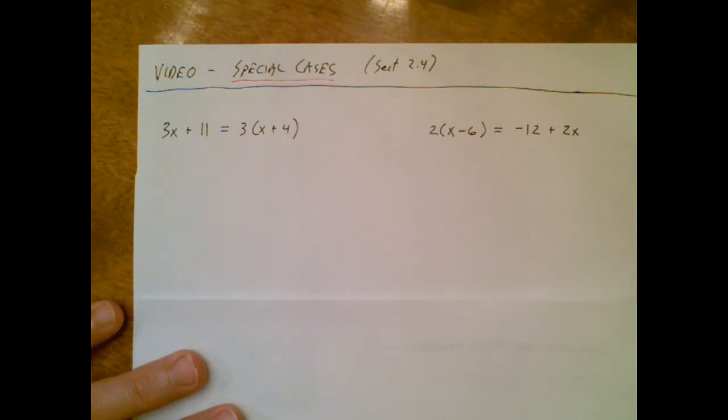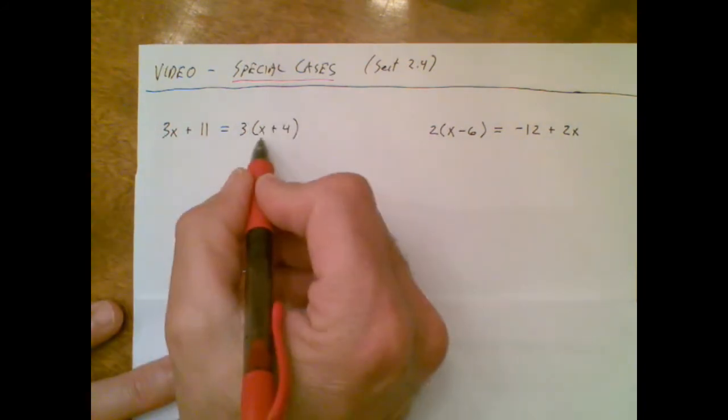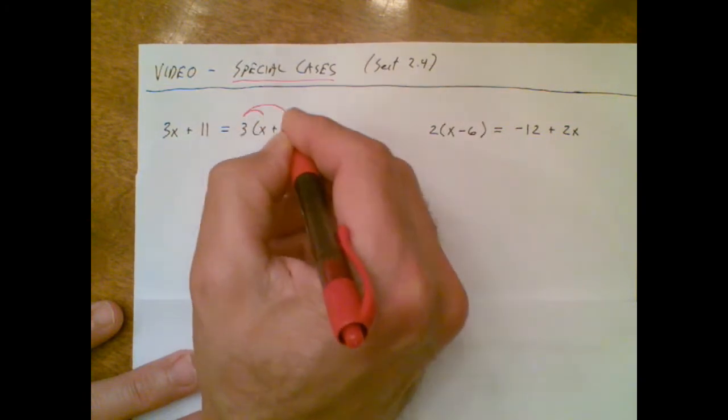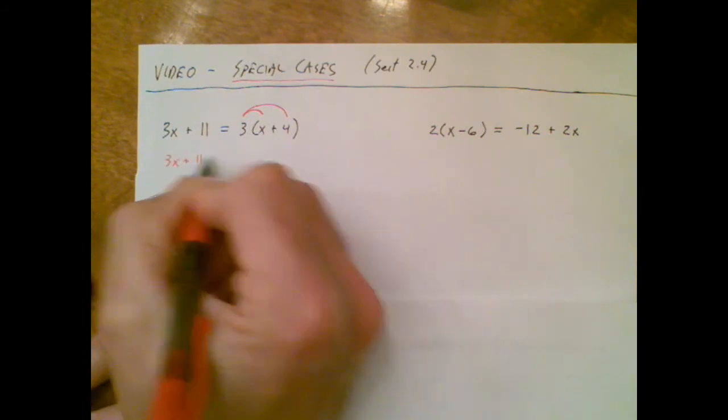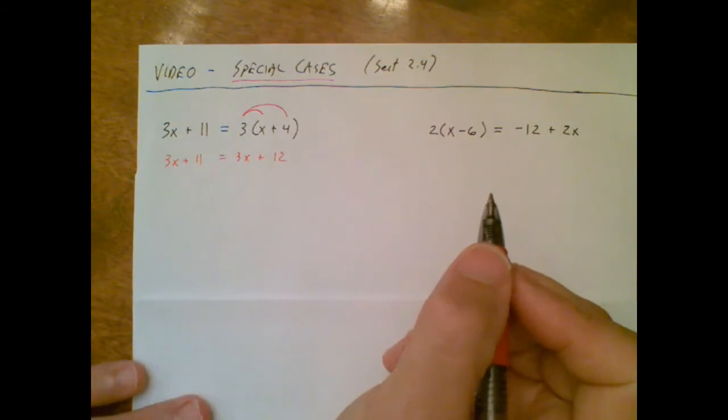So let's just sit back and watch. I see a variable on both sides, but I also see a variable inside the parentheses, so I'm gonna liberate that X by doing distribution.